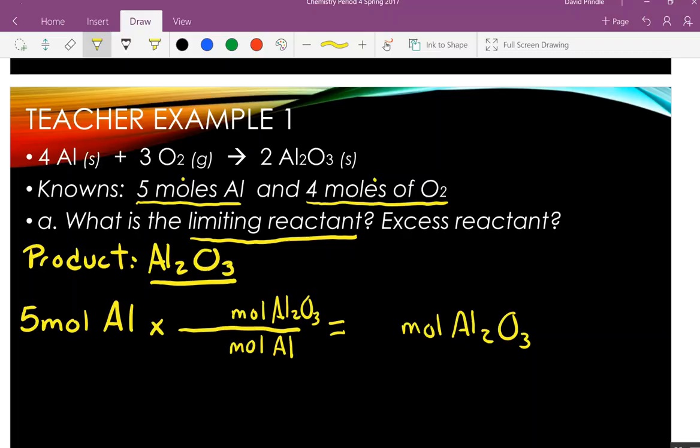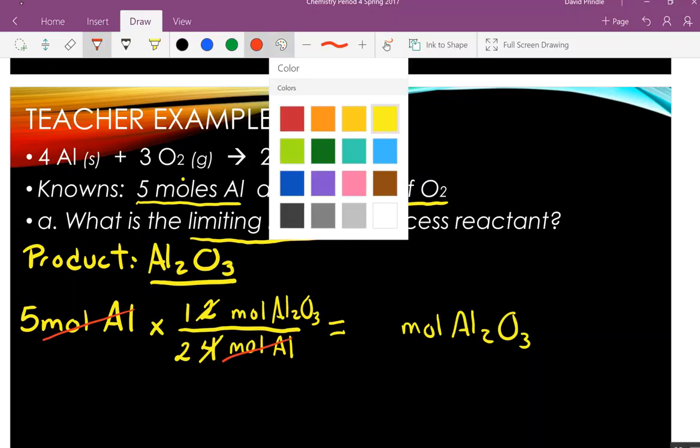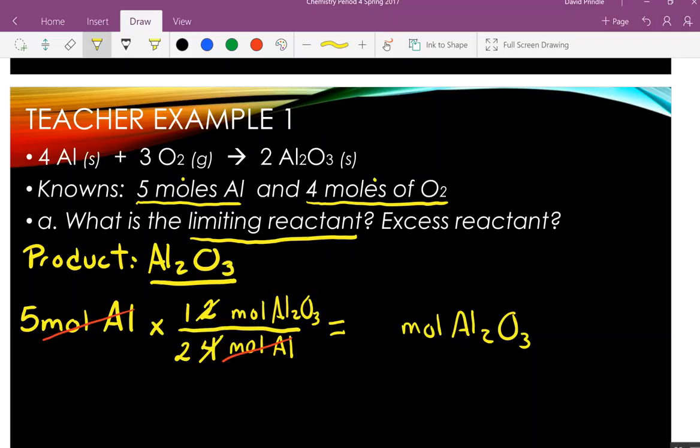What's the mole ratio of aluminum oxide to aluminum? Two to four. Can we simplify that? One to two. What cancels? Moles of aluminum. Now, here comes the hard part. Do not use a calculator for this. Five divided by two. Two point five. I should make a section of the test that's no calculators. So five moles of aluminum will make two and a half moles of aluminum oxide. Are we done yet?